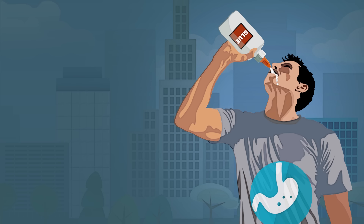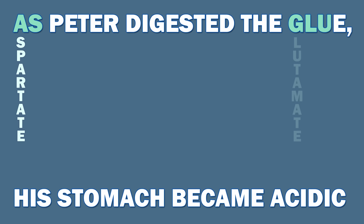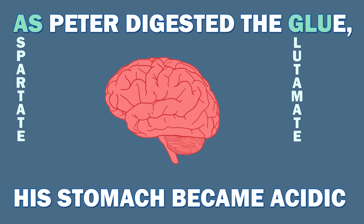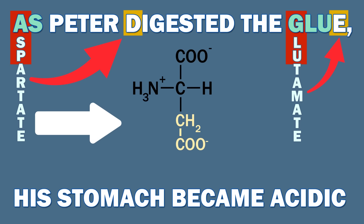There are two acid amino acids. As Peter digested the glue, his stomach became acidic. The two acid amino acids are aspartate and glutamate — actually two excitatory neurotransmitters of the brain that make postsynaptic neurons more likely to fire. The three-letter abbreviations are just the first three letters of each, but the one-letter abbreviations are not. Glutamate is easy to remember — you just glue on another carbon to aspartate's structure.